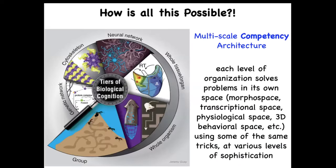This is possible because biology uses a multi-scale competency architecture. At every level — from molecular networks to cells, to tissues, to whole bodies, whether in behavioral or anatomical space — each layer solves its own problems. They are not just structural; they are problem-solving systems that navigate the space of gene expression, physiology, anatomy, three-dimensional behavioral space, and in our case also linguistic spaces. They all have different levels of sophistication, but the key is that physically rewiring them is not the only game in town — we can communicate with them.